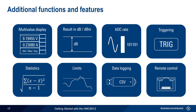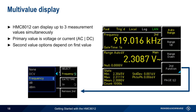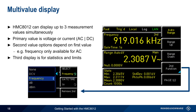Let's start by looking at the HMC's multi-value display. For some measurements, the HMC 8012 can display up to three measurement values simultaneously. The primary value in the middle of the display is voltage or current, either AC or DC. Pressing the soft key second function enables display of a second value – for example, frequency is only an option when measuring AC signals. The third display at the bottom of the screen is for statistics and limits.